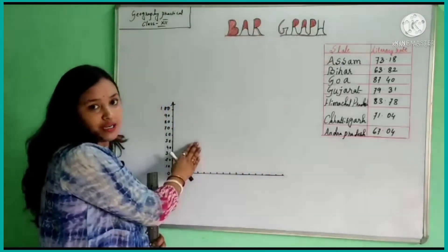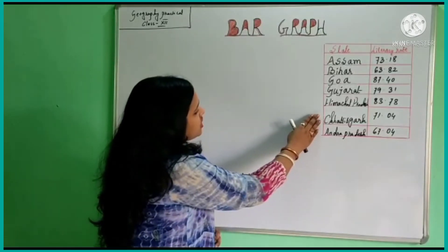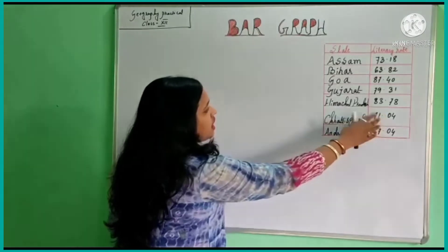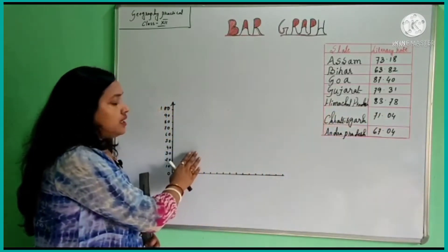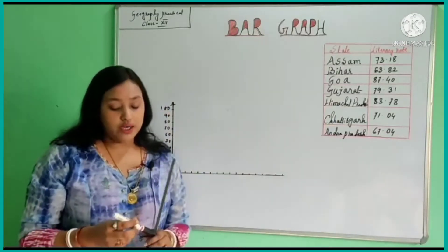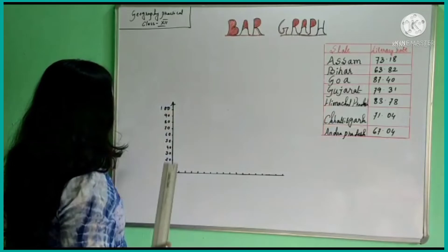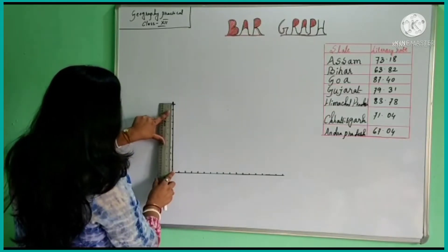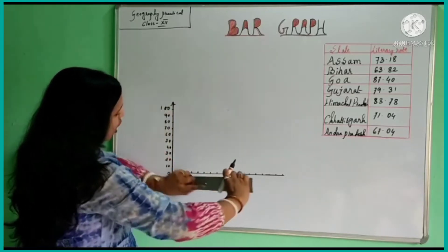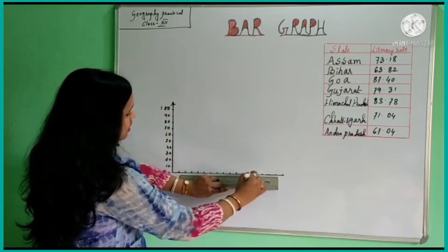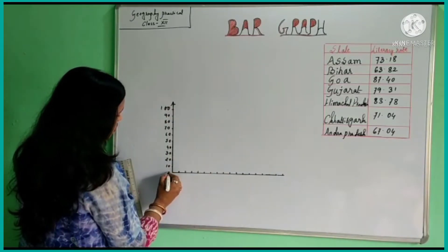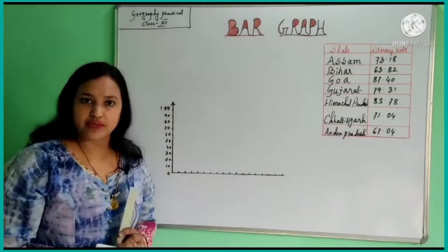In this data we have found seven states with their literacy rates. By using this data we can draw our bar graph. First of all, what we need to do is draw one vertical line and one horizontal line intersecting at zero on a graph paper.